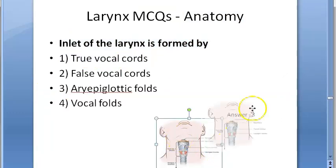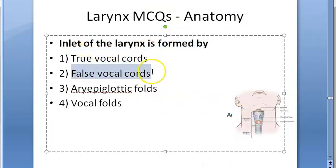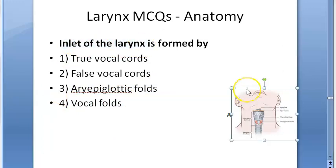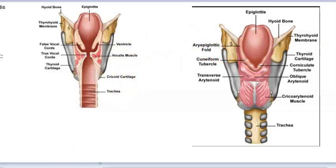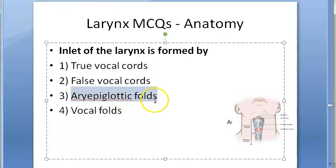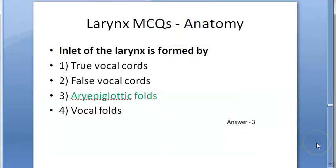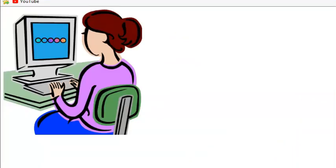The inlet of the larynx is formed by which structure — true vocal cords, false vocal cords, aryepiglottic folds, or vocal folds? Looking at the diagram: aryepiglottic folds are at the top, then false vocal cords, then true vocal cords. The answer is aryepiglottic folds.